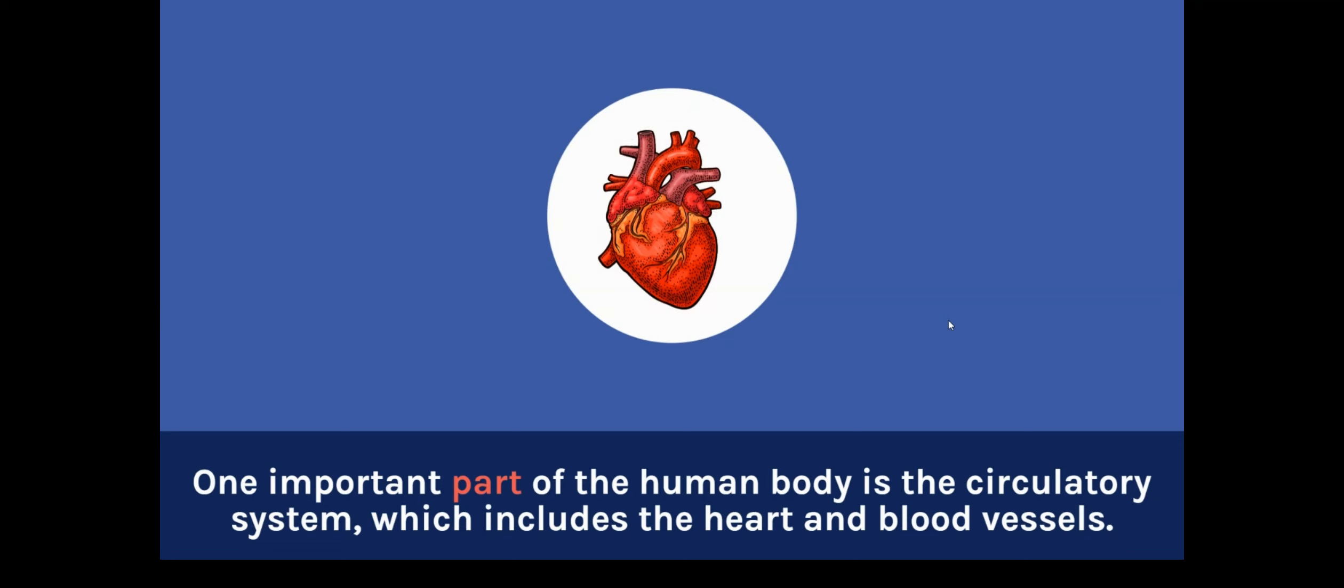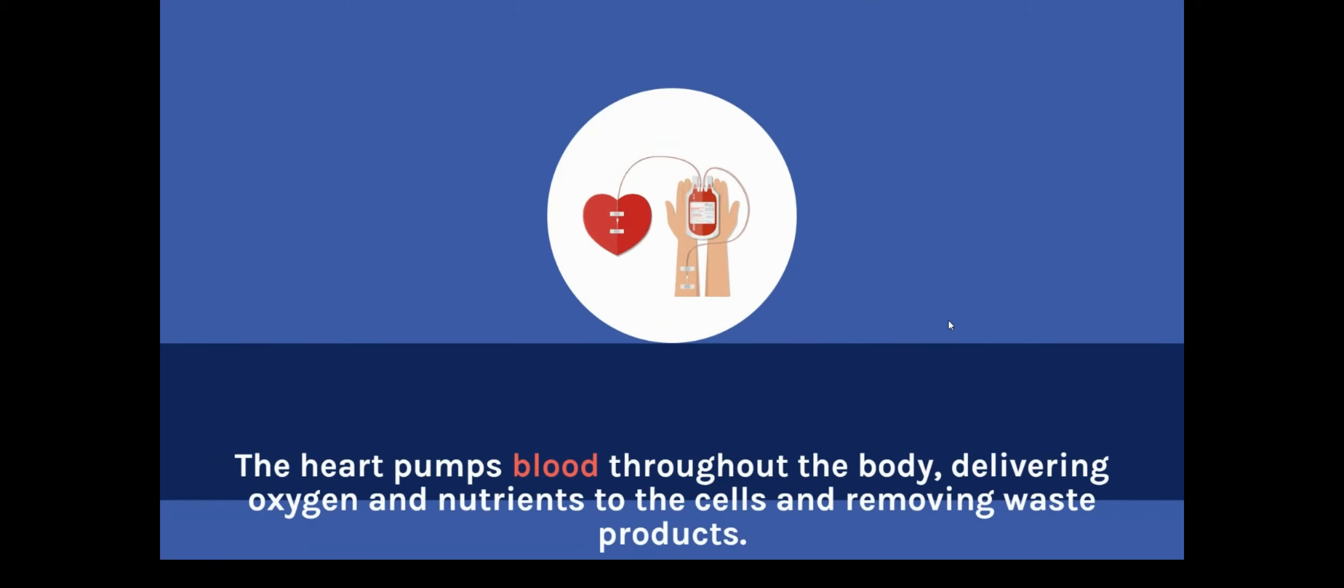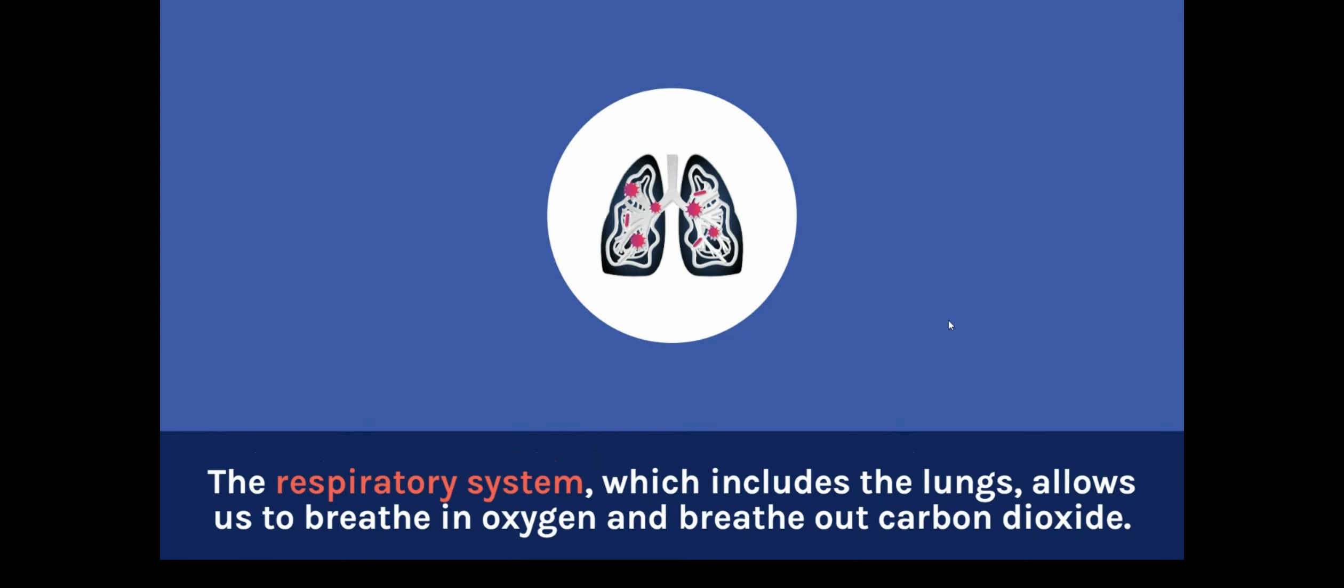One important part of the human body is the circulatory system, which includes the heart and blood vessels. The heart pumps blood throughout the body, delivering oxygen and nutrients to the cells and removing waste products.